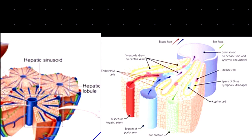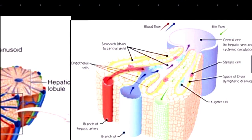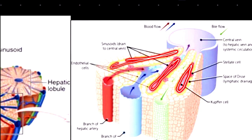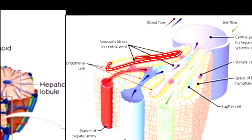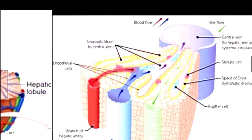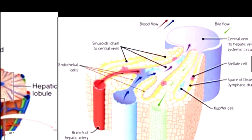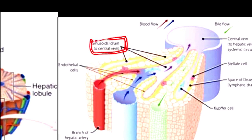One important structure to study is the sinusoids. These are spaces within the hepatocytes. Looking at this area carefully, before zooming in, you can see cells here — these are our hepatocytes. The spaces between them are called sinusoids.